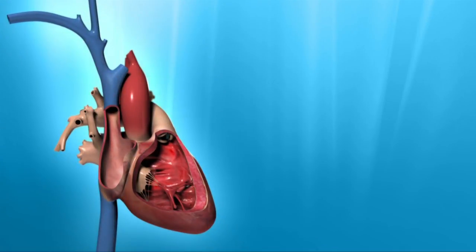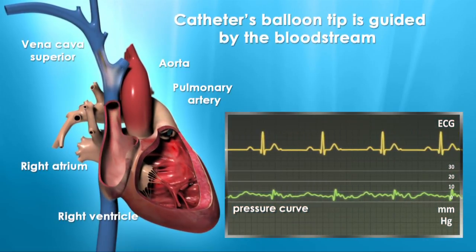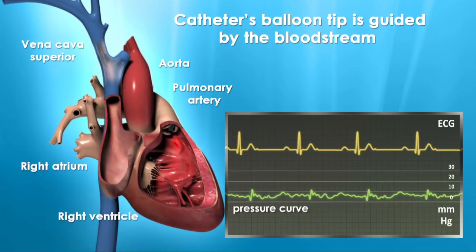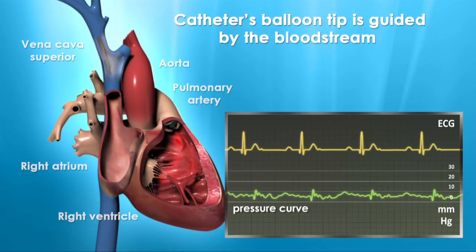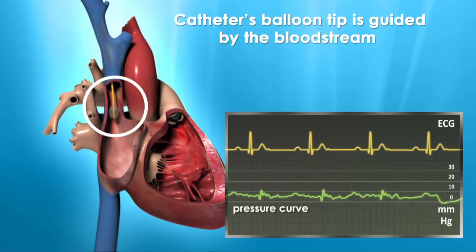One function of the balloon at the tip is to guide the catheter to its desired destination. After the balloon has been inflated, it is taken up by the venous bloodstream and flow directed to and subsequently through the right side of the heart.